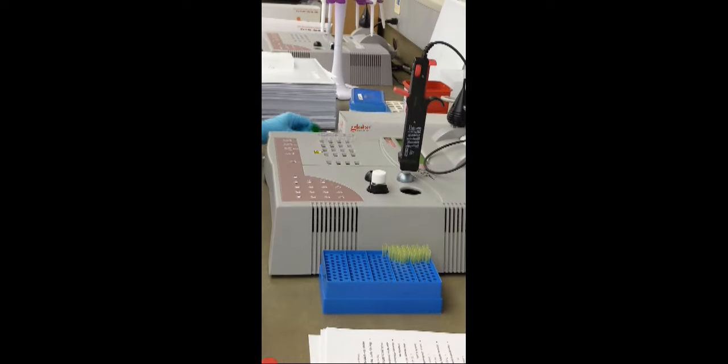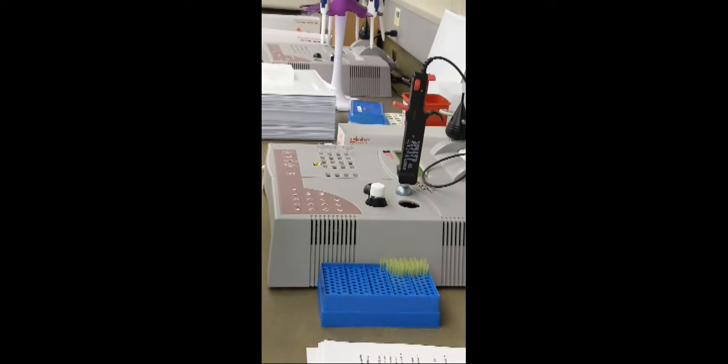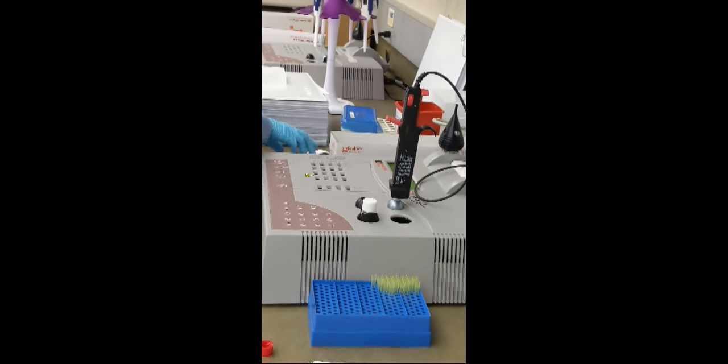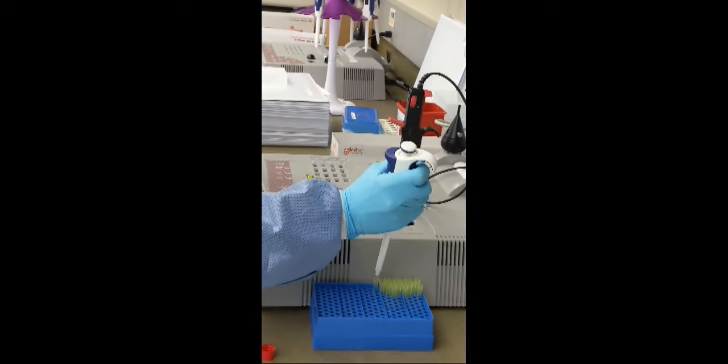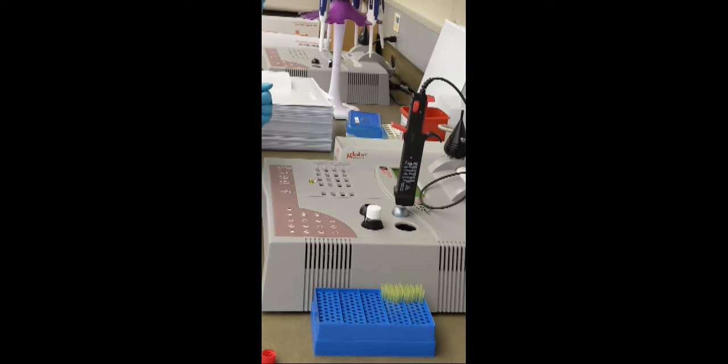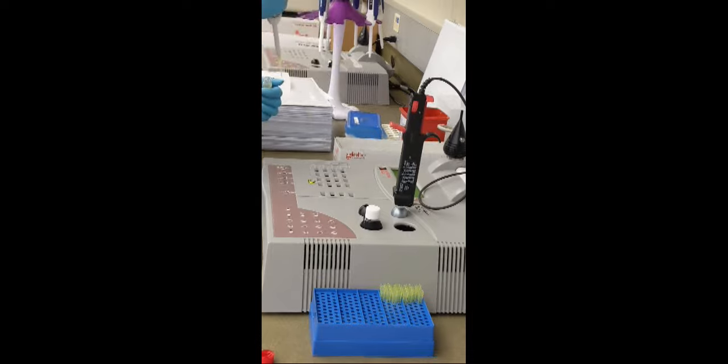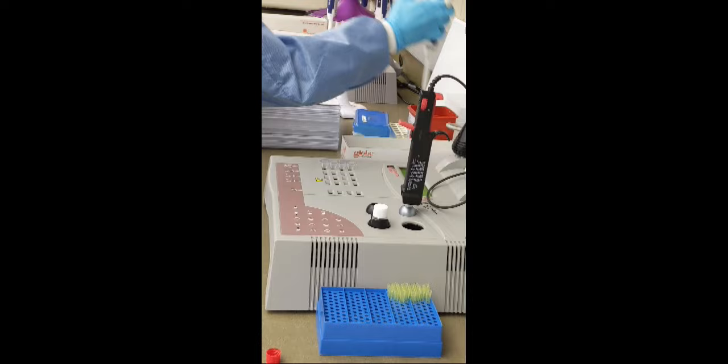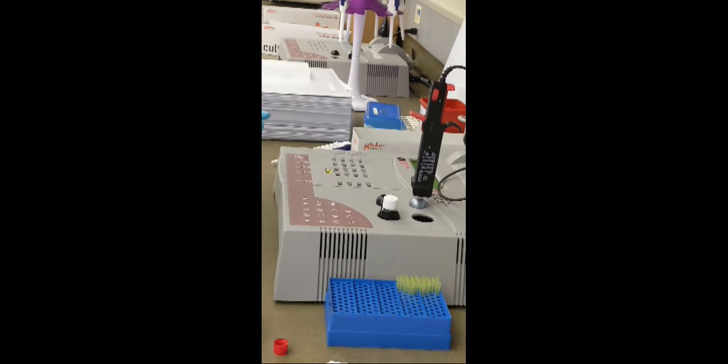And then, I'm going to take the high control, and we dispense it into the next two cubettes. This is going in position three, and then four, which is also displayed on the SOP that Sonia provides you with.